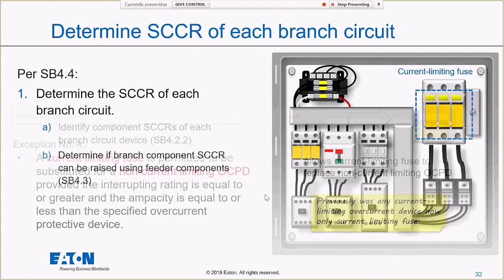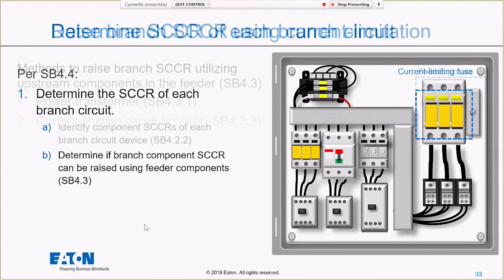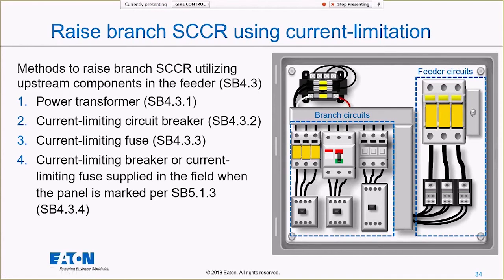That completes Step 1A — identify my short circuit current ratings. Step 1B is by far the most complicated: determining if my branch component short circuit current rating can be raised using feeder components. The types of feeder components I can use for this are: a power transformer, a current-limiting circuit breaker, a current-limiting fuse, or a current-limiting breaker or fuse supplied in the field with specific markings.